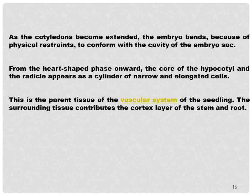From the heart-shaped phase onward, the core of the hypocotyl and the radicle appears as a cylinder of narrow and elongated cells. This is the parent tissue of the vascular system of the seedling. The surrounding tissue contributes the cortex layer of the stem and root.